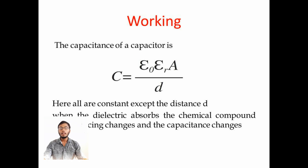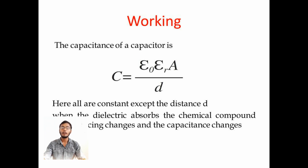By changing the area of the capacitor plate, we can change the solute. The dielectric acts as an absorbable medium which absorbs certain ions from the chemical solutions. After absorbing, the dielectric expands in size. Therefore, the distance between the plates increases. Therefore, the capacitance changes. According to this, we can find the chemical concentration of the solution.